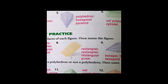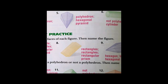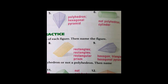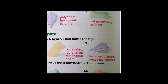Question eight — the base is a rectangle and all other faces are also rectangles, so we call it a rectangular prism, because we have two bases that are parallel, congruent, and rectangular.